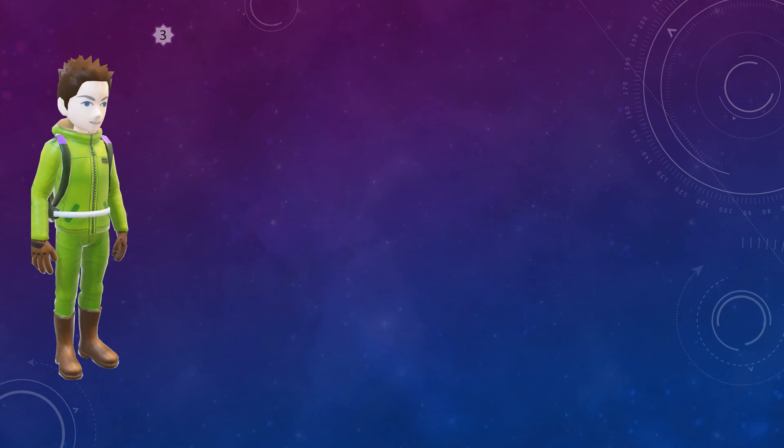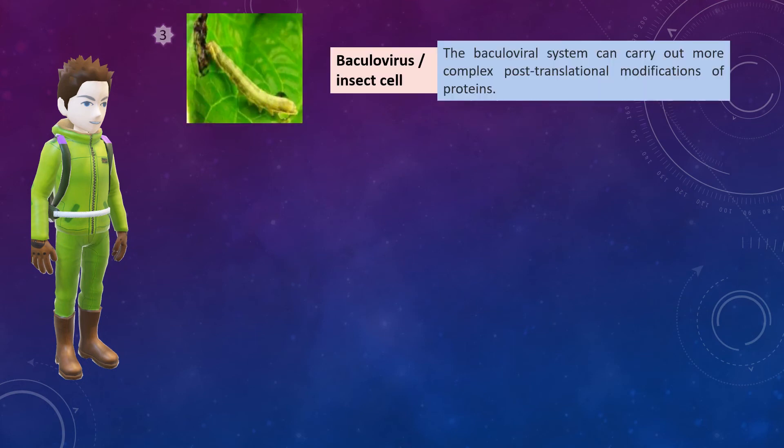At number three we have certain baculoviral systems. If you want to produce a protein with post-translational modifications, you would go for this particular GRAS organism.